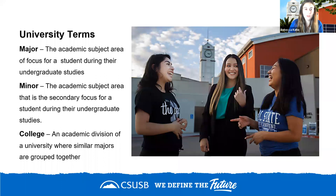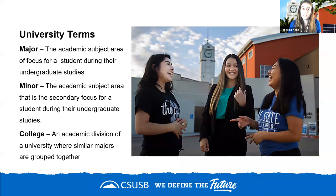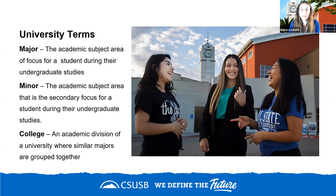I want to define a few terms commonly used at US institutions. A major is the academic subject area you focus on during undergraduate studies. Typically, a major involves about one and a half to two and a half years of coursework at most liberal studies universities. A minor is the secondary focus of academic studies, typically equivalent to one to two semesters of coursework.